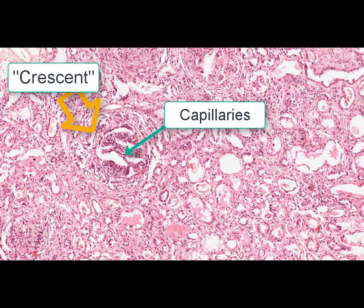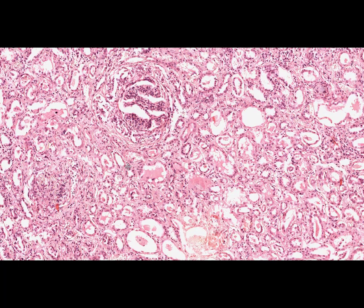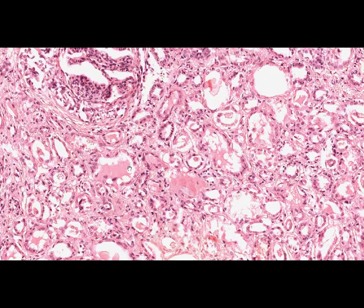Among other changes we can find degenerative and necrobiotic changes in the tubular epithelium, and some features of sclerosis and lymphohistiocytic infiltration in interstitial tissue. The morphological changes of the glomeruli functionally manifest as glomerular filtration impairment, leading to renal failure.